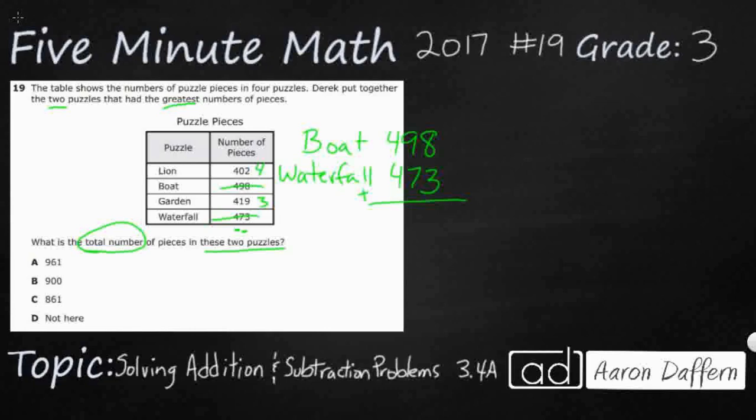This is a pretty simple addition problem once we went through that step of finding the two pieces. So 8 and 3 is 11, carry that 1. 1 and 9 is 10, and 7 is 17. So I've got 4 and 4 is 8, and 1 is 9. 971 is not here. It's really close to this one, though, so maybe I made a mistake.